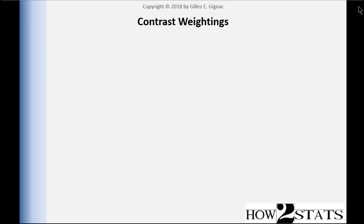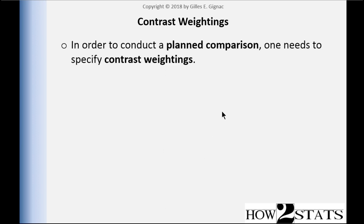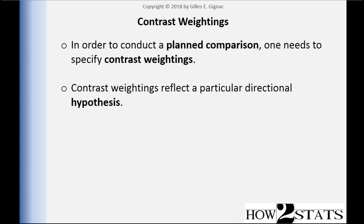In this video, I'm going to talk about planned comparisons and the corresponding contrast weightings that need to be specified in order to conduct most planned comparisons. In order to conduct a planned comparison, one needs to specify contrast weightings, and these contrast weightings reflect a particular directional hypothesis. So we're in the land of directional hypotheses where we might be doing a one-tailed test rather than a two-tailed test, because you're specifying the direction of the effect.